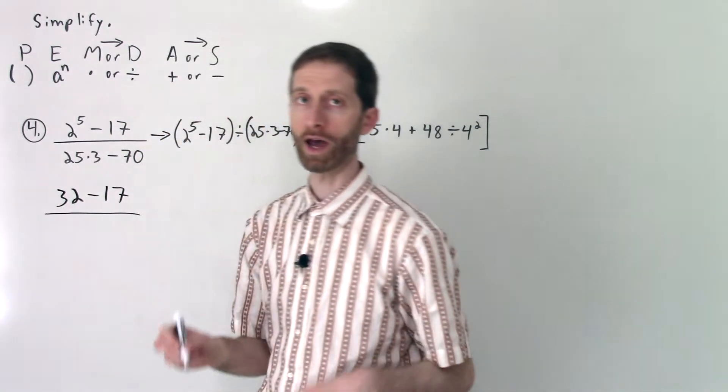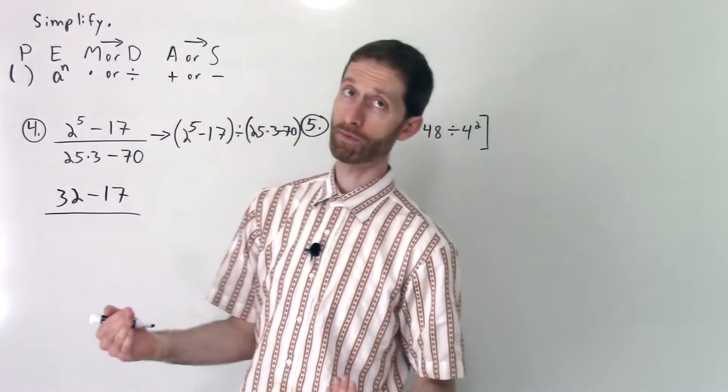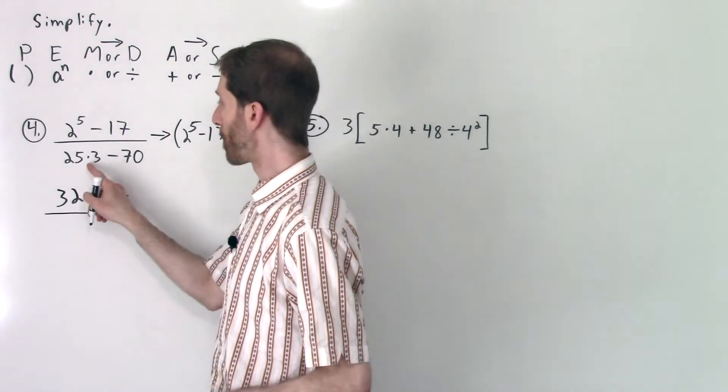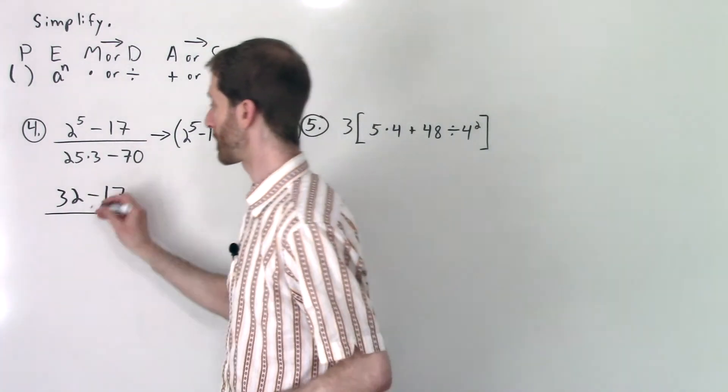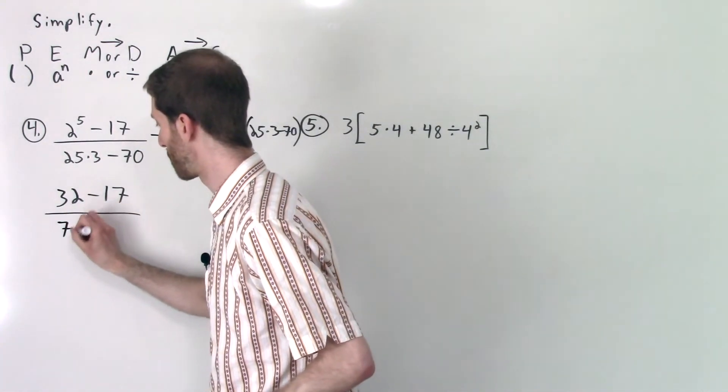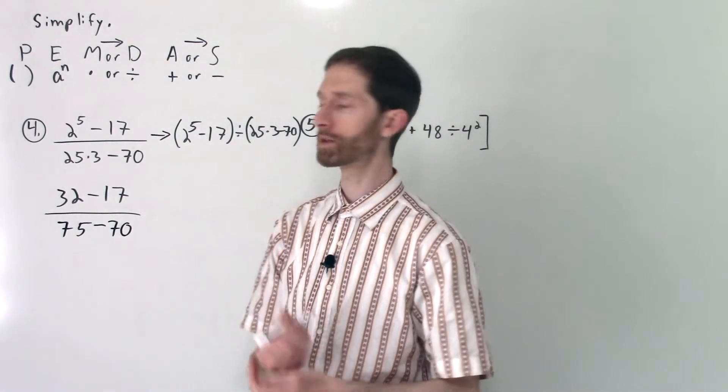Let's look at the numerator. We'll use the order of operations with our numerator first. That's exponents and then subtraction. So 2⁵ is 32 - 17. Now I like to do both the numerator and denominator at the same time. Let's simplify the denominator as well. We have multiplication and subtraction, so multiplication will come first. So 25 × 3 is 75 - 70.